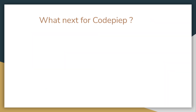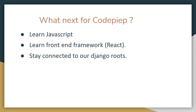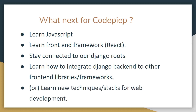Let me tell you what we are planning next for CodePipe. We will try to make some example videos on JavaScript as a library. After this, we will try to learn a new frontend framework like React and make some example videos on that. While learning this, we will stay connected to our Django roots and try to know how we can integrate our Django backend with the frontend library or framework — like JavaScript and React. Along the way, maybe we can learn new techniques or new stacks for web development, including different databases and backends.